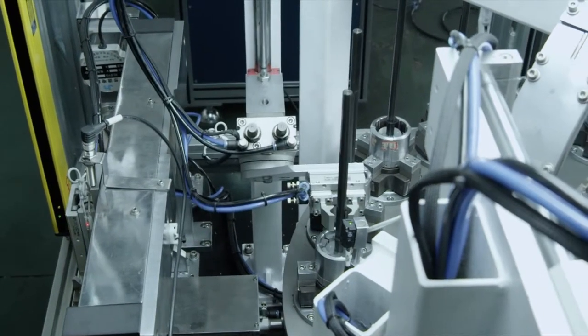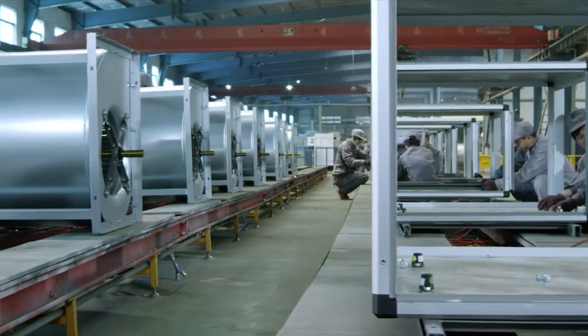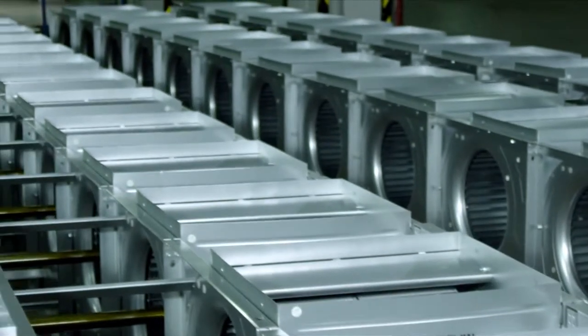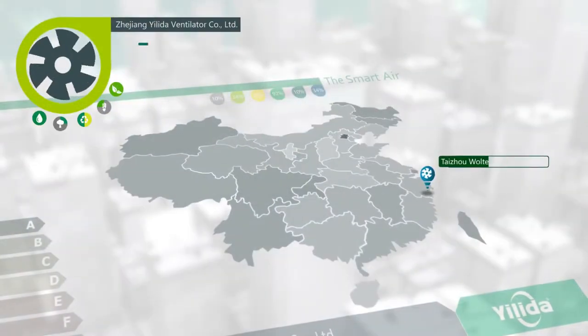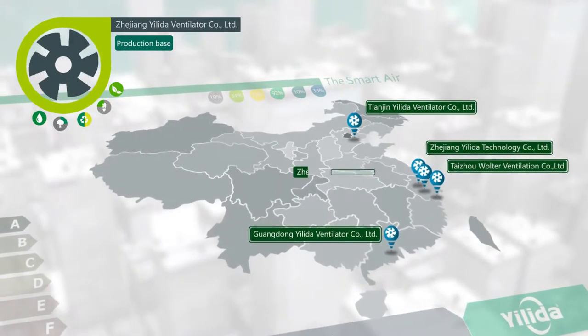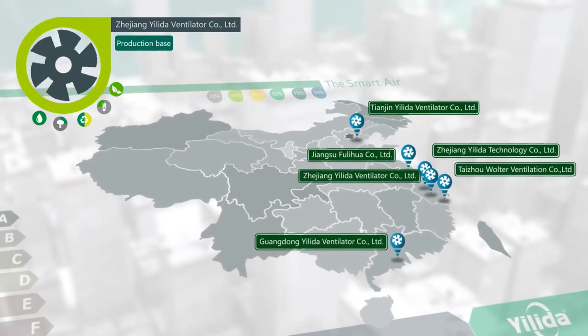In 20 years of development, Yelida has become a national high-tech enterprise, the largest air-conditioning fan company and the renowned suppliers for building ventilation. The company has established manufacturing bases for fans and components in Taizhou, Guangzhou and Tianjin and built the manufacturing base for axial fans in Suzhou, Zhengjigong.